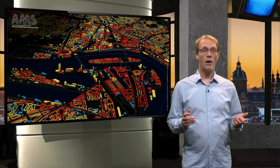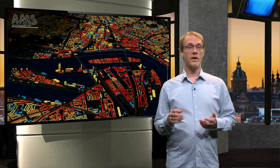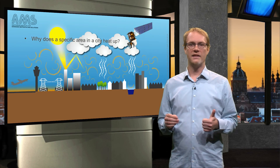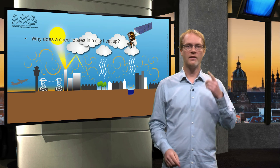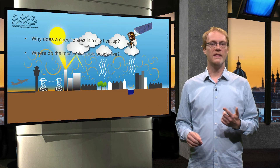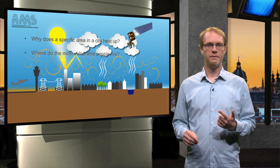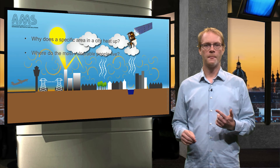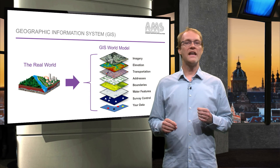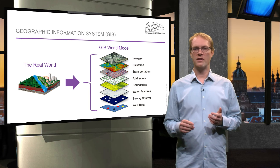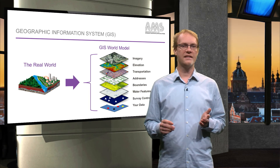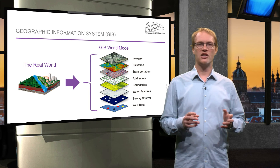So, by now we know where the city heats up, but two questions remain. First, why does a specific area in a city heat up? And second, where do the most vulnerable people live? We answer both questions using a geographic information system, in short a GIS and spatial analysis.